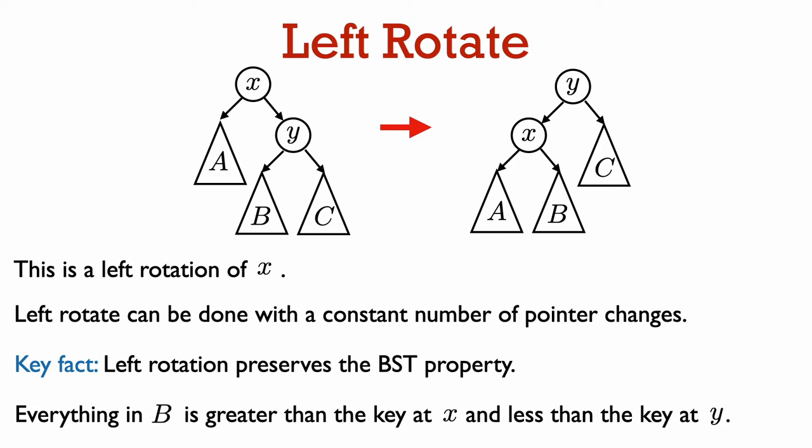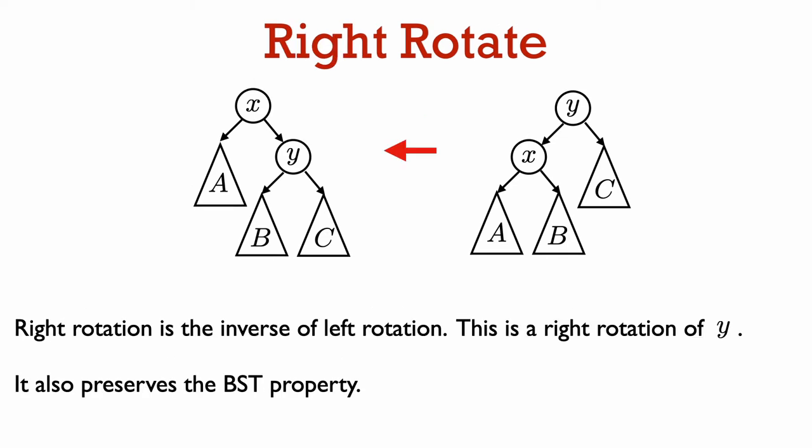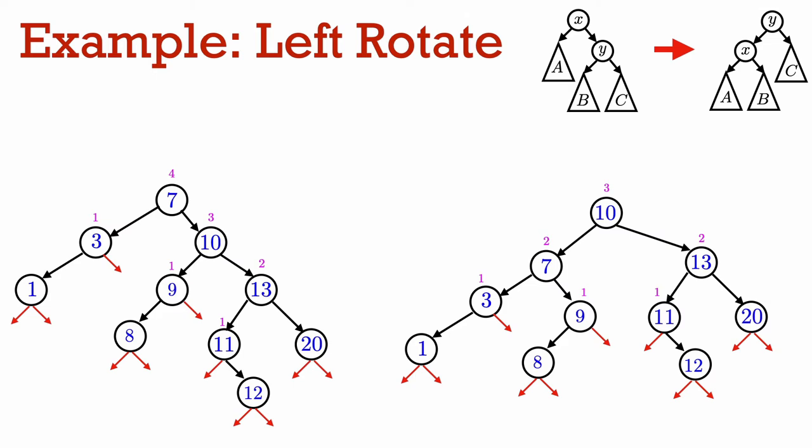Alternatively, if you like in-order traversal, you can see that an in-order traversal of the tree on the left does the exact same thing as an in-order traversal of the tree on the right. An in-order traversal of the tree on the left would first print out all the keys in A, then the key at X, then all the keys in B, then the key at Y, and finally all the keys in C. The exact same thing happens on an in-order traversal of the tree on the right. A right rotation is just the inverse operation of a left rotation. If we start with the picture on the right and do a right rotation on Y, then we get the picture on the left. This also preserves the BST property.